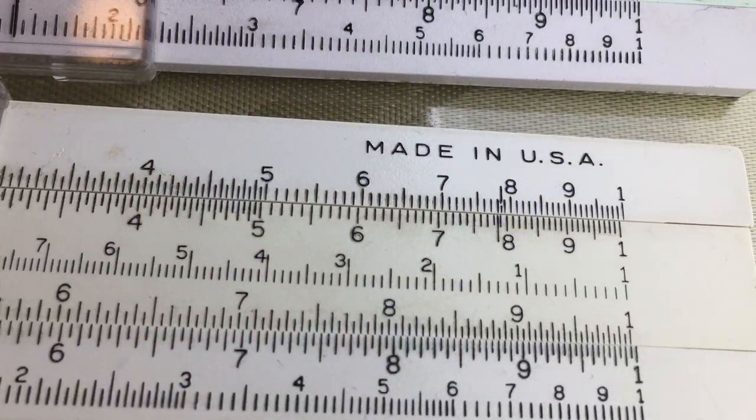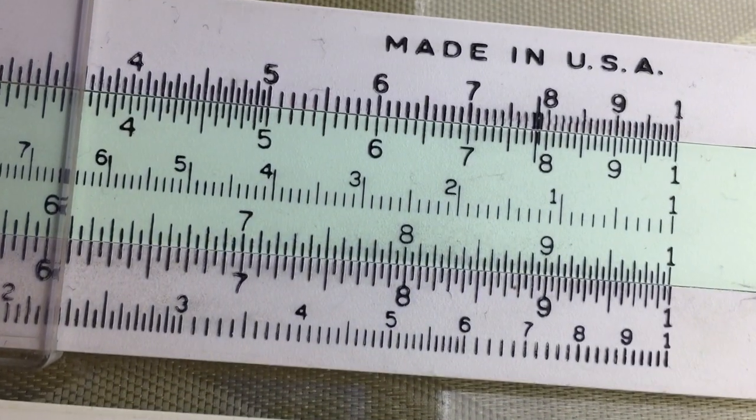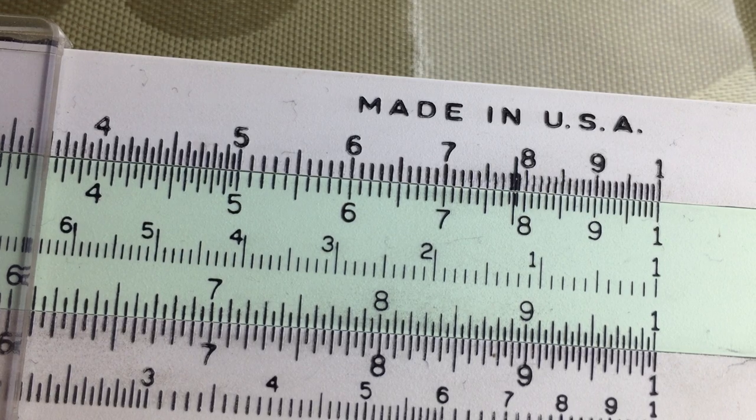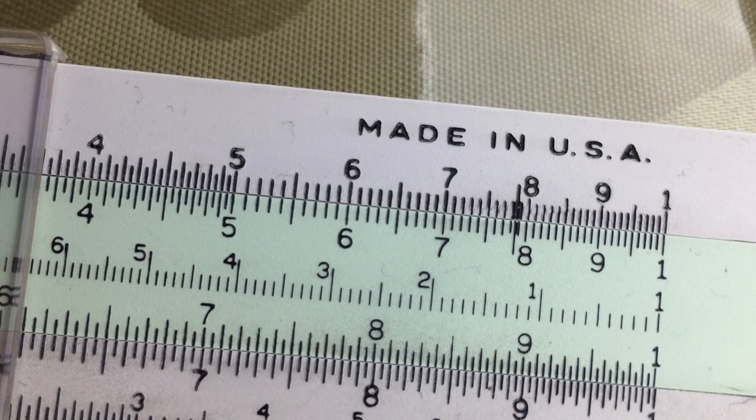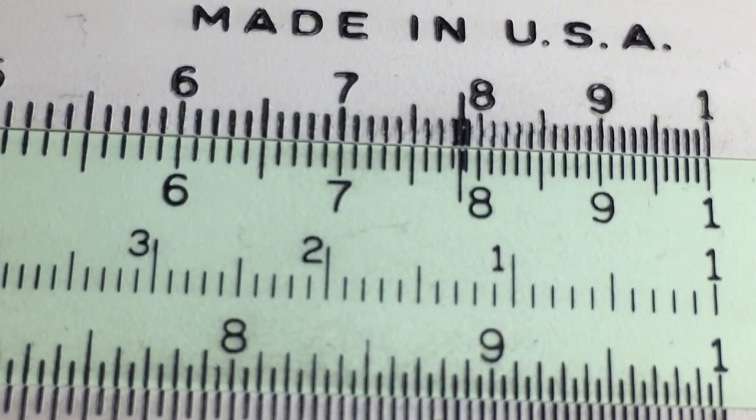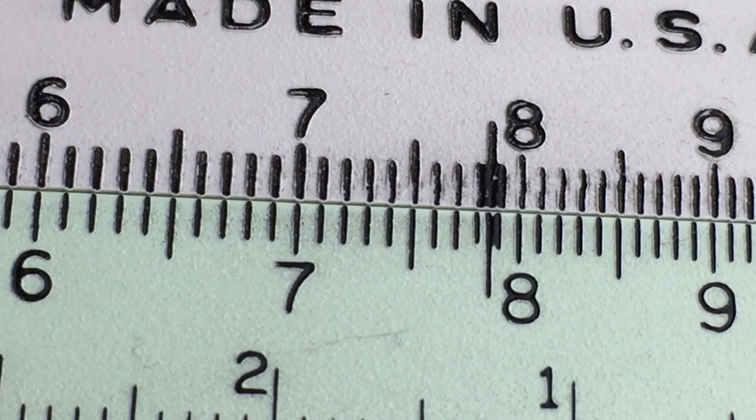I didn't realize until later that they were actually the same on both slide rules and they were pi divided by 4 which happens to be 0.785. If you look closely here I'll zoom in you can see